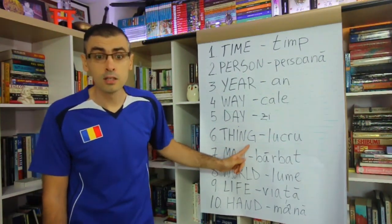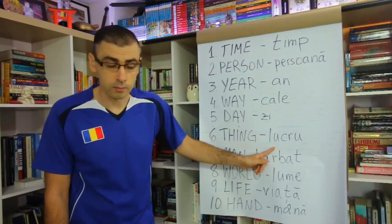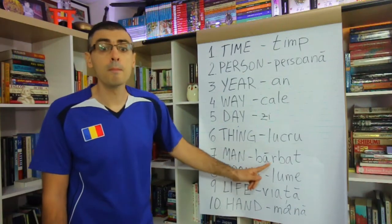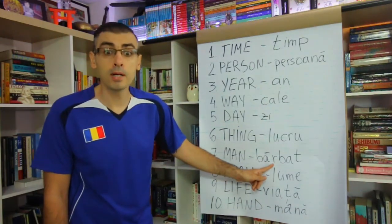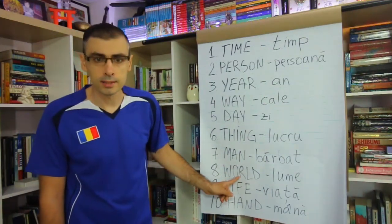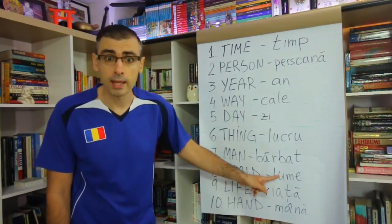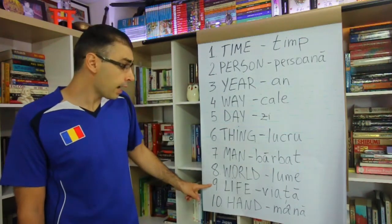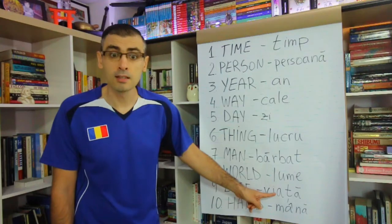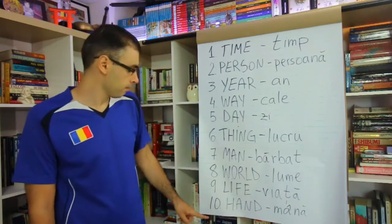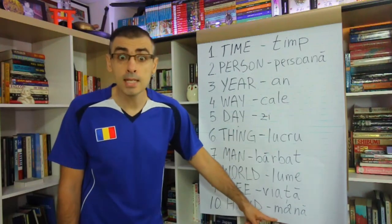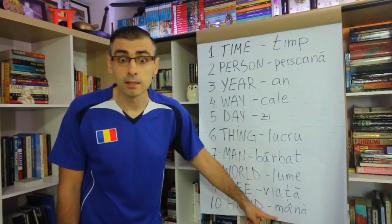Six, thing, lucru, lucru. Seven, man, bărbat, bărbat. Eight, world, lume, lume. Nine, life, viață, viață. Ten, hand, mână, mână.